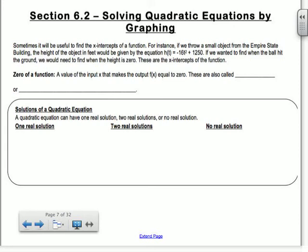Sometimes it will be useful to find the x-intercepts of a function. For instance, if you throw something up in the air from the Empire State Building, the height of the object in feet would be given by that equation. If we wanted to find when it hit the ground, that means the height would be equal to zero. So you would find when h of t equals zero. These would be the x-intercepts of the function.